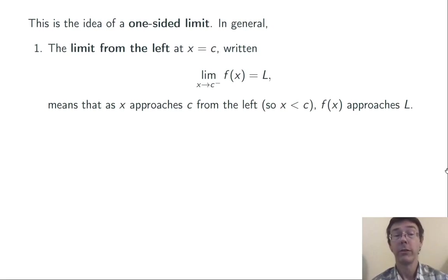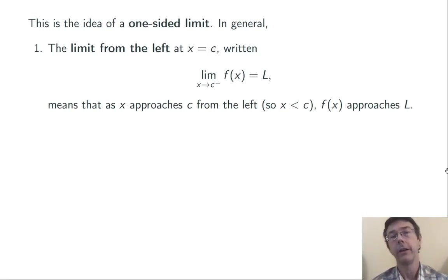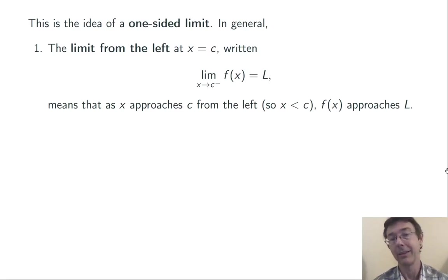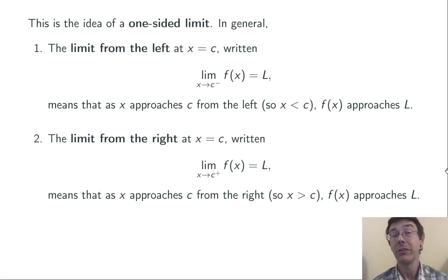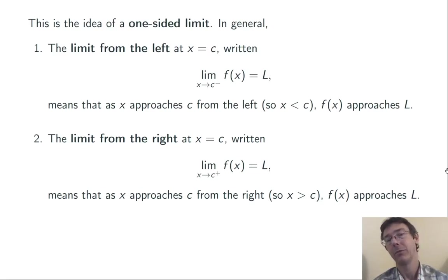Here's the more general definition for left and right limits. We write the limit as x goes to c from the left of f of x equals L to mean that as x gets closer and closer to c from the left — so x is always less than c — f of x approaches L. Similarly, we write the limit as x goes to c from the right of f of x equals L to mean that as x approaches c from the right — so x is always greater than c — f of x approaches L.